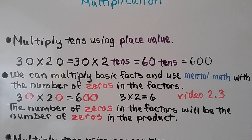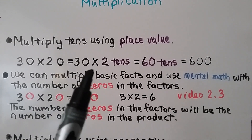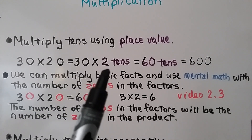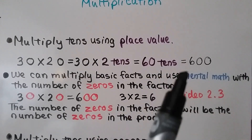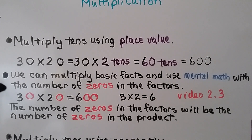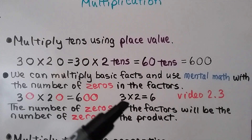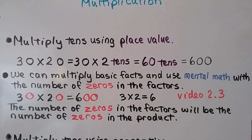We can multiply tens using place value. For 30 times 20, we can think of it as 30 times 2 tens, which is 2 times 30, giving us 60 tens, equal to 600. We can also multiply basic facts and use mental math with the number of zeros in the factors. For 30 times 20, the basic fact is 3 times 2 equals 6. There are two zeros in the factors, so we put two zeros in the product: 600. The number of zeros in the factors will be the number of zeros in the product.